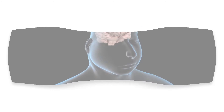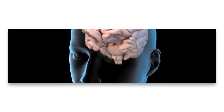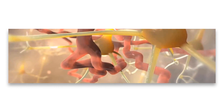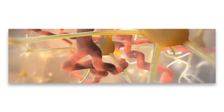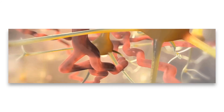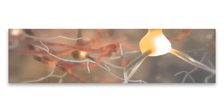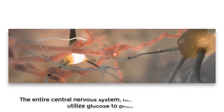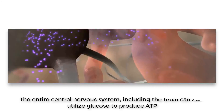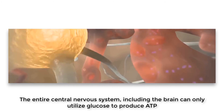The reason for keeping blood glucose in a constant range is because of the demand for glucose by the brain and the rest of the central nervous system. While other tissues of the body can rely on glucose, fatty acids, and amino acids to produce ATP, the entire central nervous system, including the brain, can only utilize glucose to produce ATP.